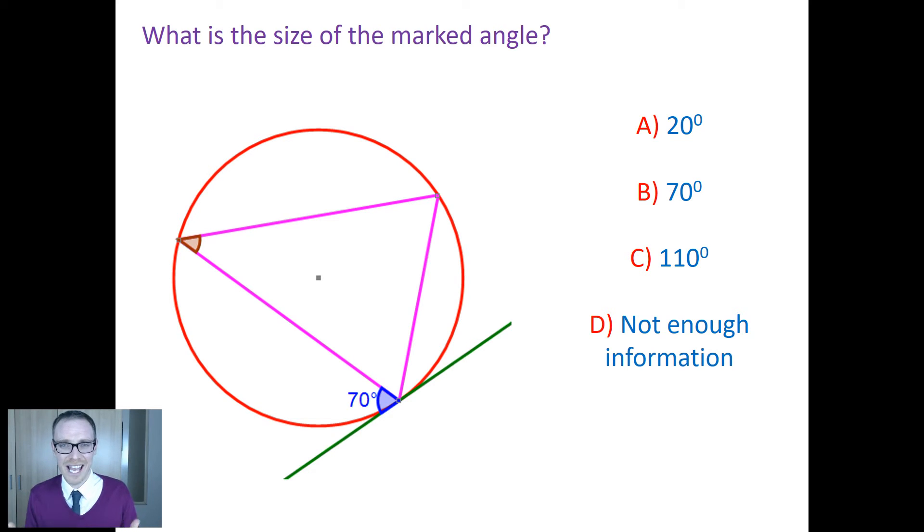But it almost goes against every fibre of your being to think that that's the right answer. And that's what's brilliant about it. Because to choose D, you've got to be good enough to rule out A, B and C. So you've got to avoid falling into the trap of thinking it's A because maybe they've got to add up to a right angle.